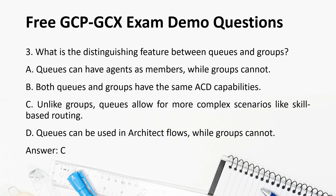Question 3: What is the distinguishing feature between queues and groups? a. Queues can have agents as members, while groups cannot. b. Both queues and groups have the same ACD capabilities. c. Unlike groups, queues allow for more complex scenarios like skill-based routing. d. Queues can be used in architect flows, while groups cannot. Answer: c.